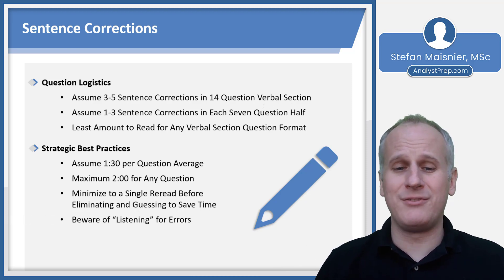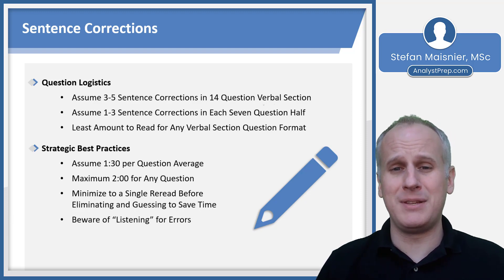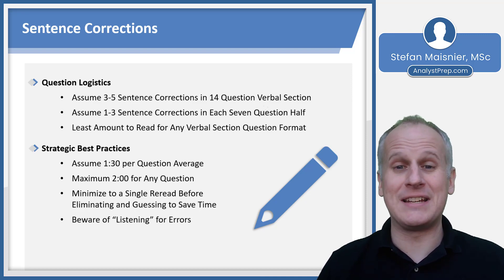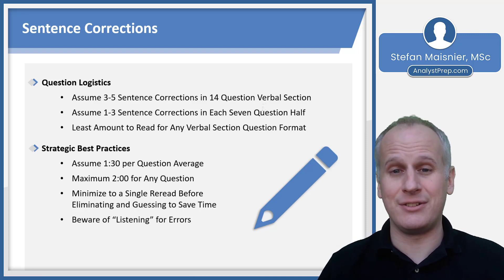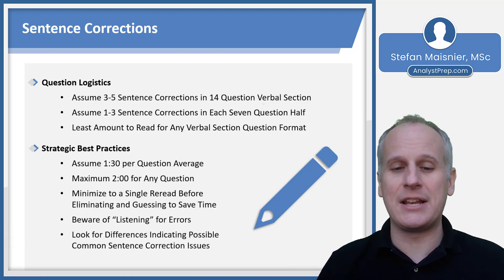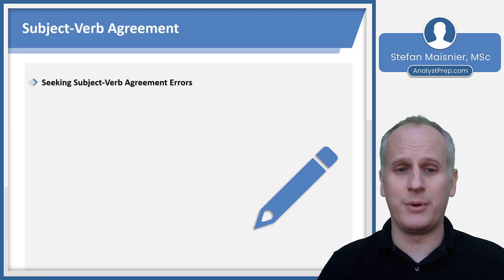You'll want to be aware that just listening for errors is unreliable, because most people's ear for English has been contaminated by conversational language that isn't actually technically correct. You can instead look for differences that might indicate common sentence correction issues, starting with subject-verb agreement.